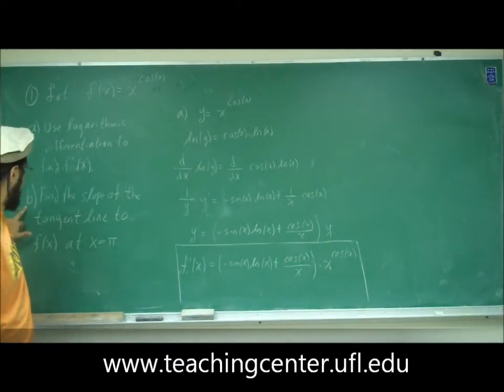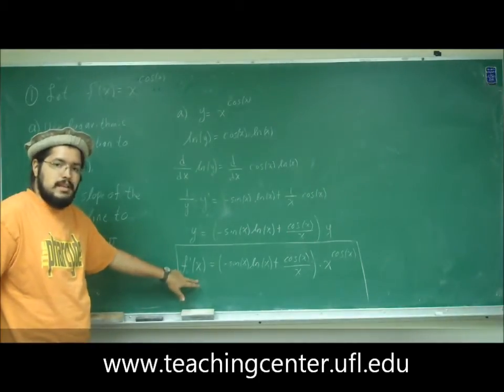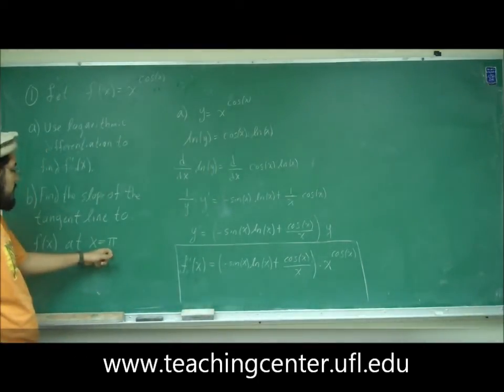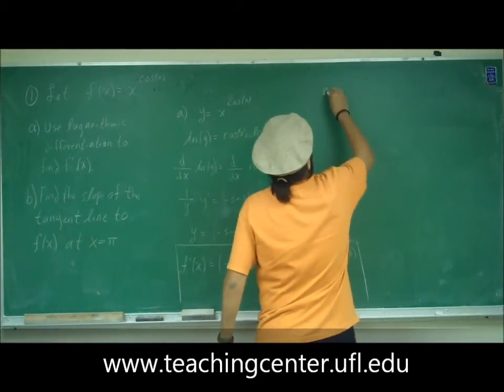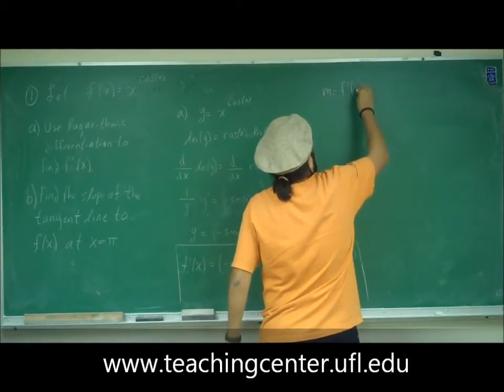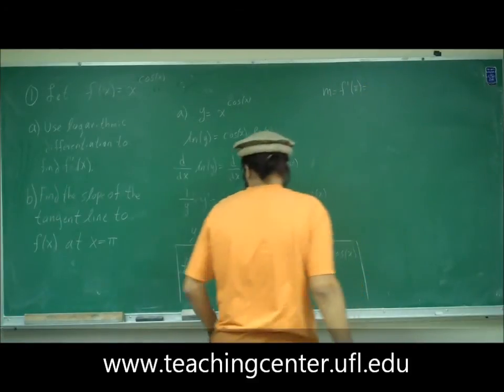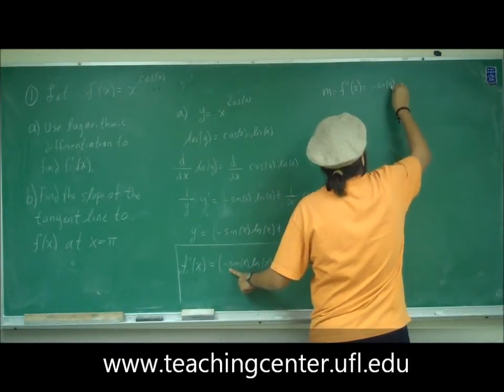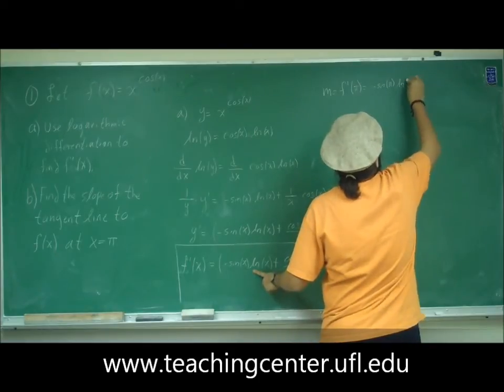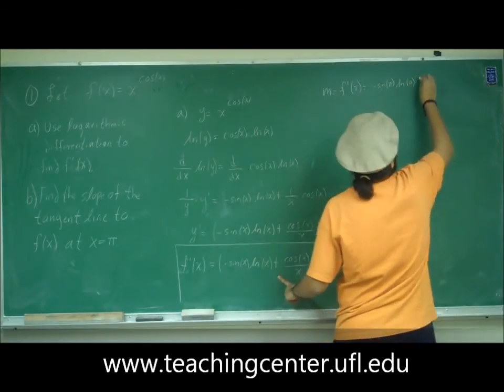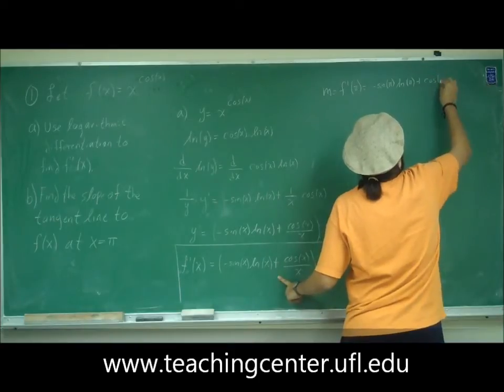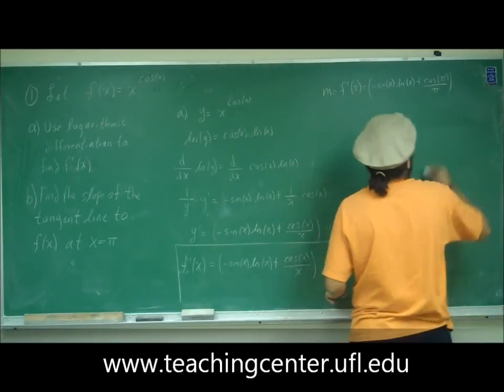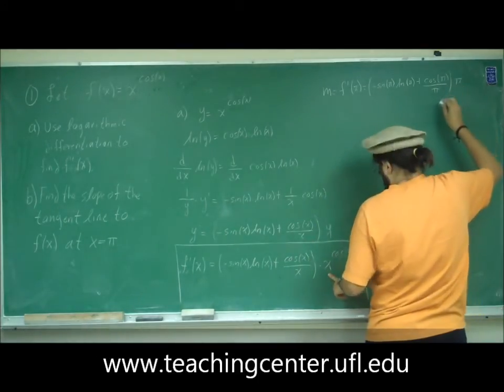Now part b: find the slope. We know that f prime is m, the slope. Pretty much this whole thing is the equation for the slope. All we're going to do is plug in pi for x. So m equals f prime of pi. Plug pi here, we get minus sine pi ln pi plus cosine pi over pi, and all this times pi to the cosine pi.